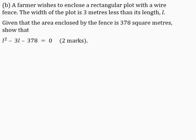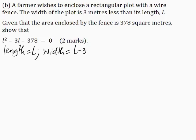Part B: a farmer wishes to enclose a rectangular plot with a wire fence. The width of the plot is 3 meters less than its length L. Given that the area enclosed by the fence is 378 square meters, show that L squared minus 3L minus 378 is equal to 0 for 2 marks. The length is equal to L, and the width is equal to L minus 3.